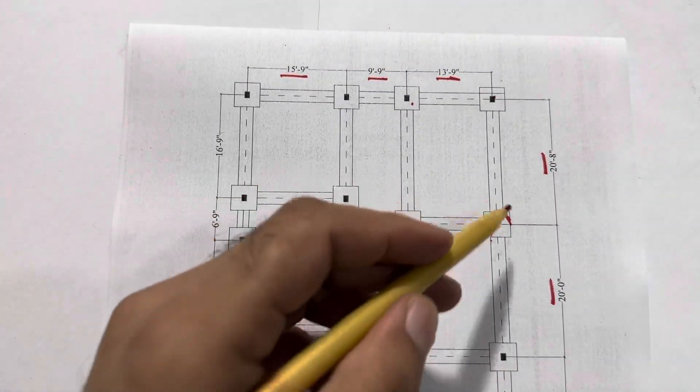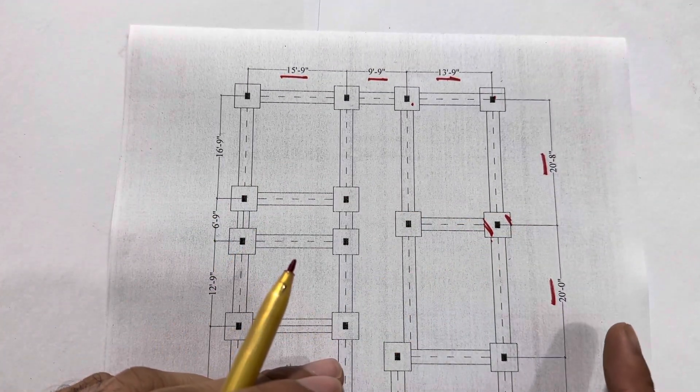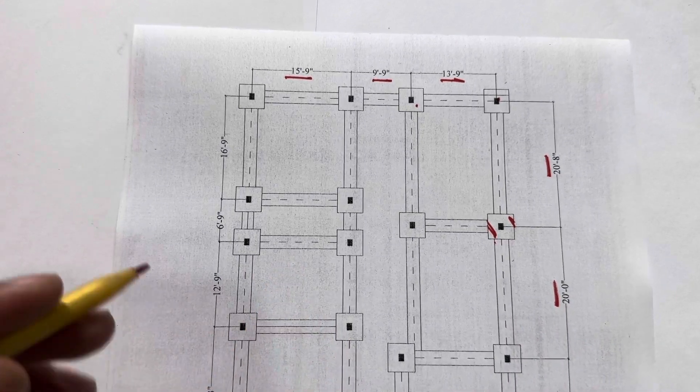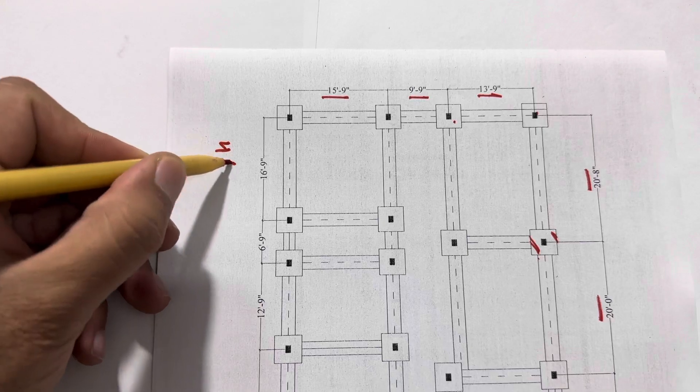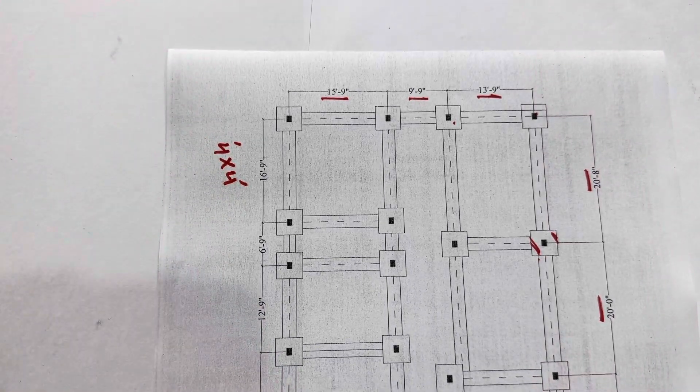Here, if you see, the dotted lines show you the central line for each footing. Remember, the footing size is 4 by 4 feet. This is the size of footing, 4 feet by 4 feet.